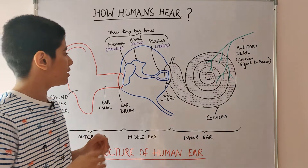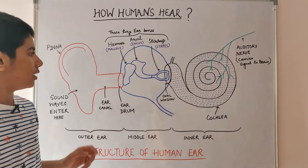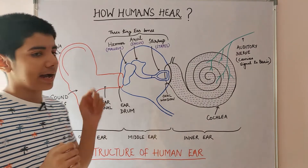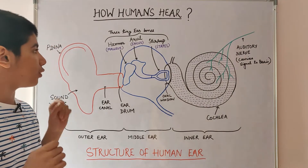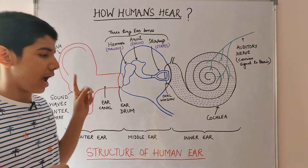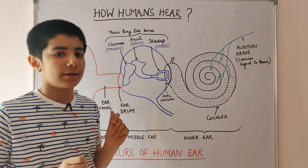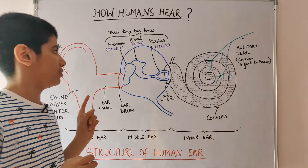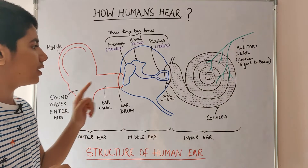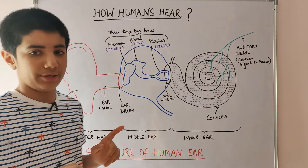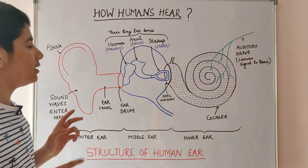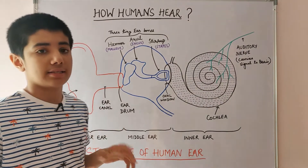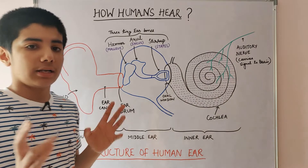The vibrating eardrum causes the small bone hammer to vibrate. The hammer causes the second bone anvil to vibrate, and the anvil causes the third bone stirrup to vibrate. The three tiny ear bones act as a system of levers.